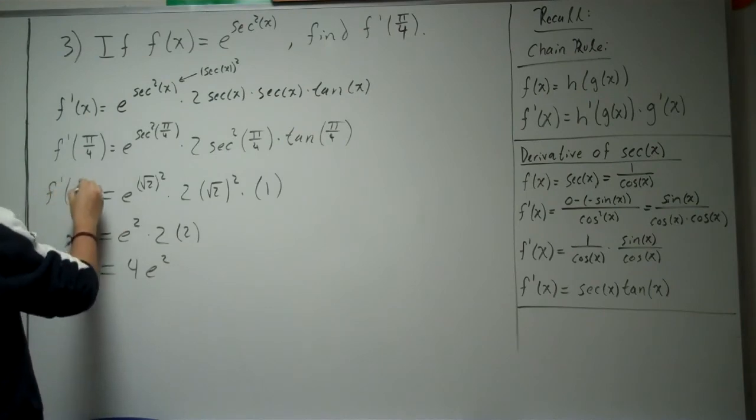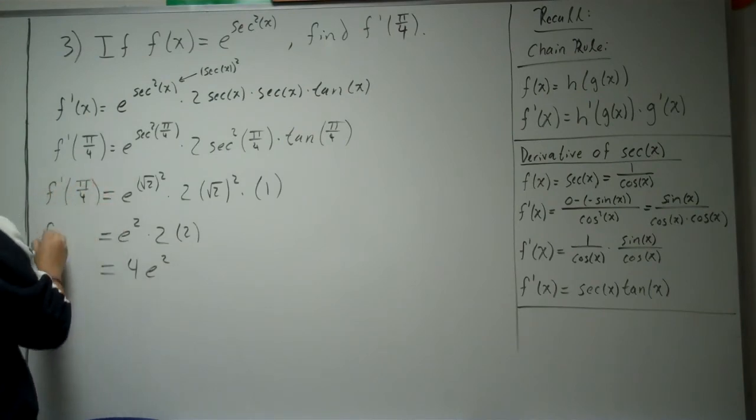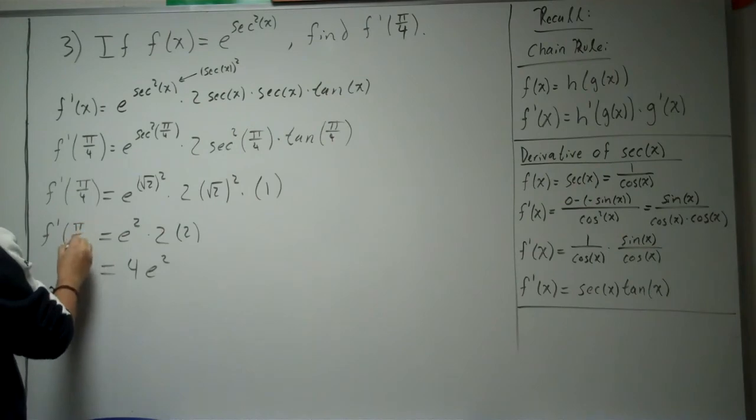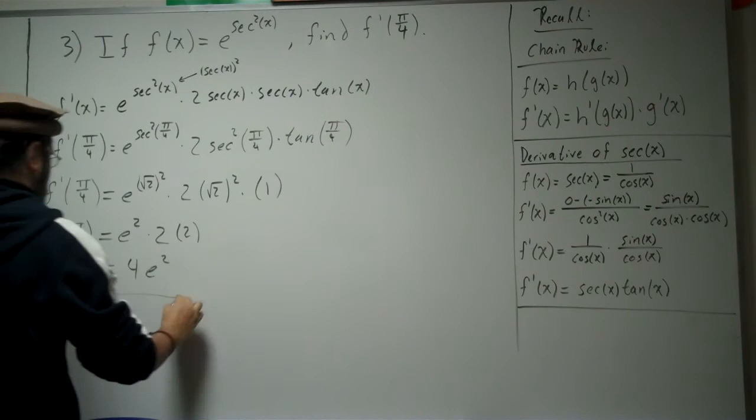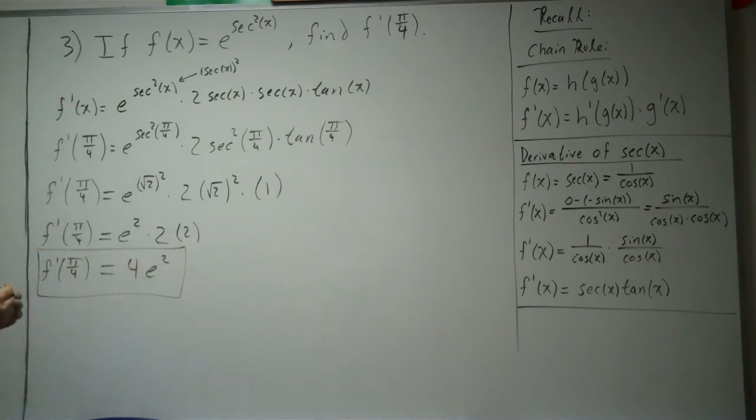So that's f prime at pi over 4. f prime at pi over 4. And finally, that's what we get. So that's our final answer. f prime evaluated at pi over 4 is going to be 4 e squared.